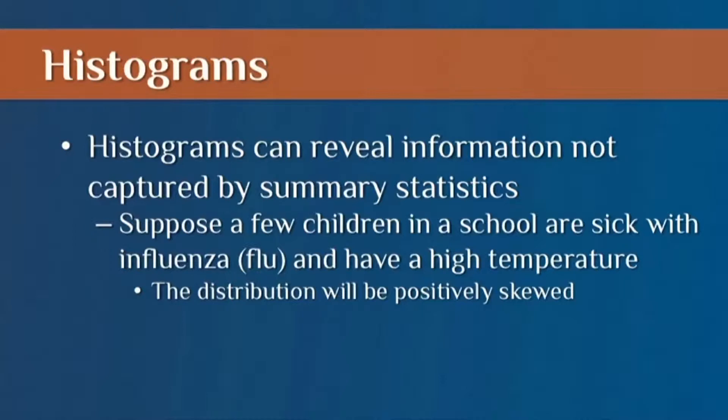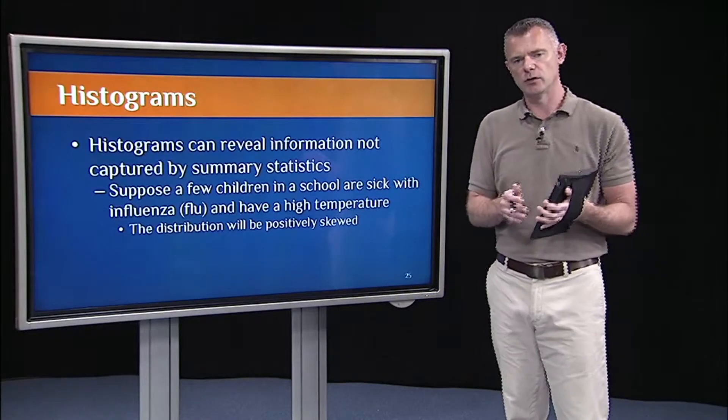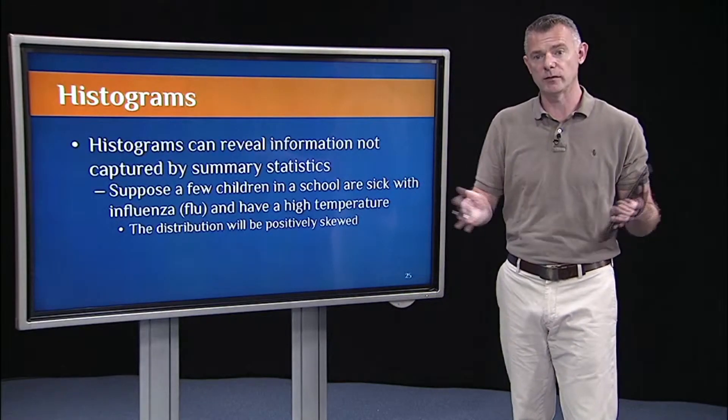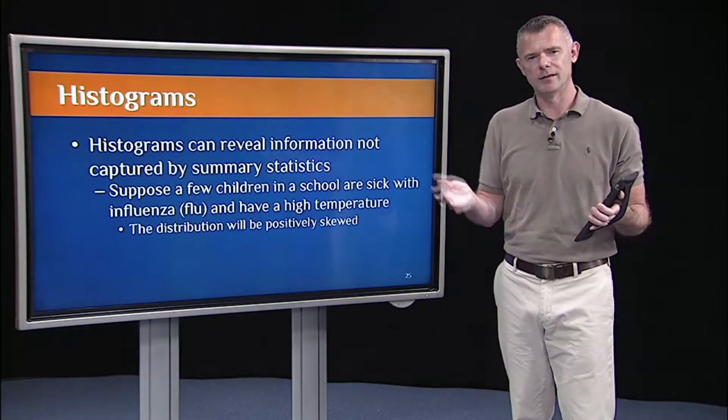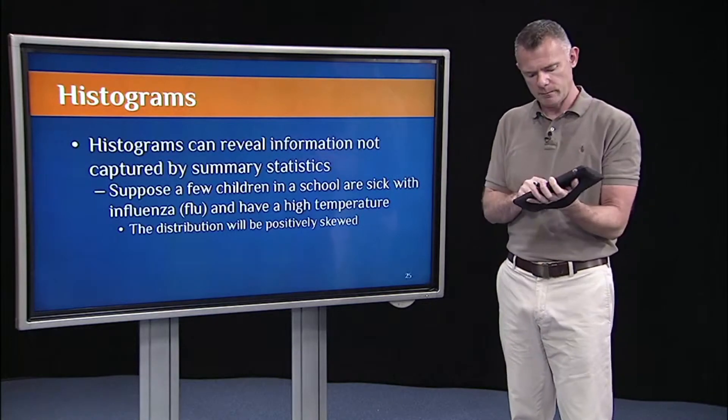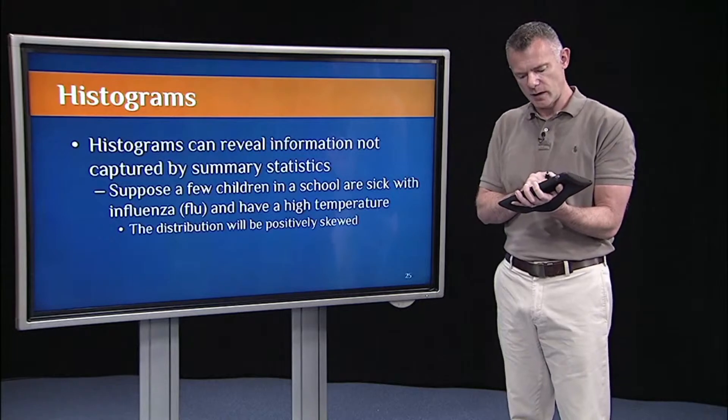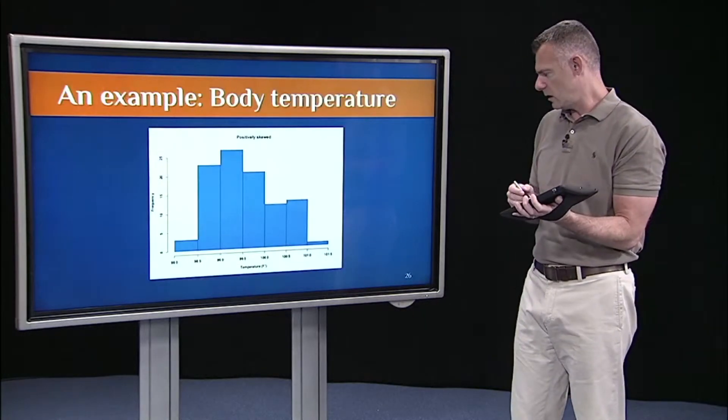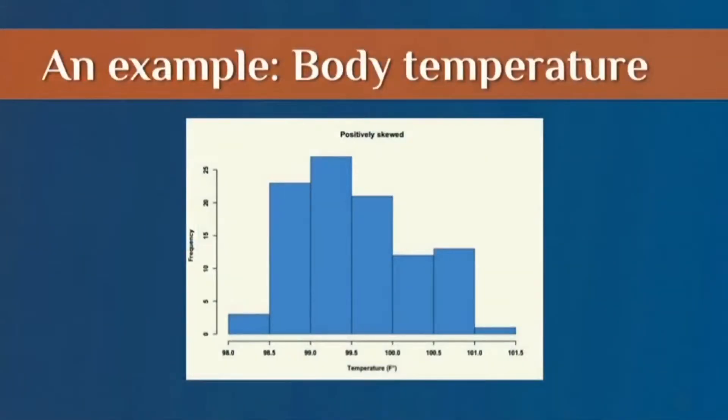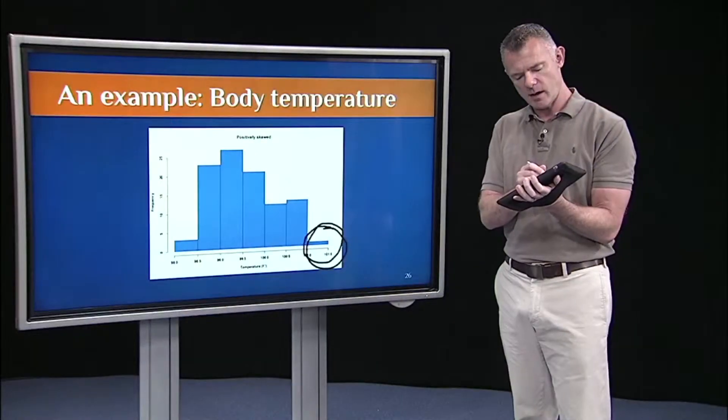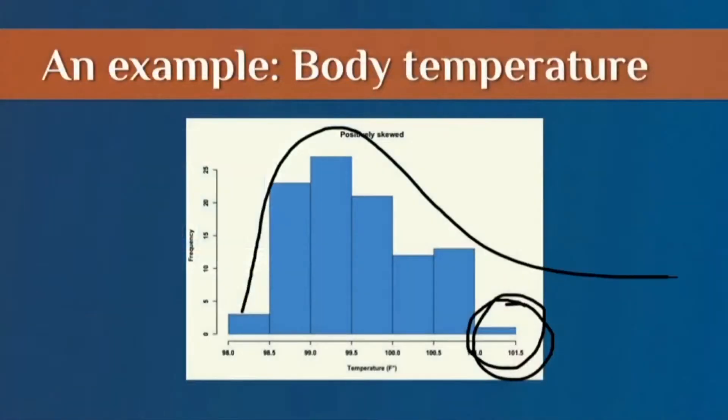We might not capture that just by getting the average body temperature across the whole group, especially if it's a really large group, right? Those couple of kids who are sick won't really show up. But if we look at the histogram, then what we'll see is we have one kid out here who has a temperature of like over 101. So it's not quite normal. It's more like this, if I had to smooth it out.